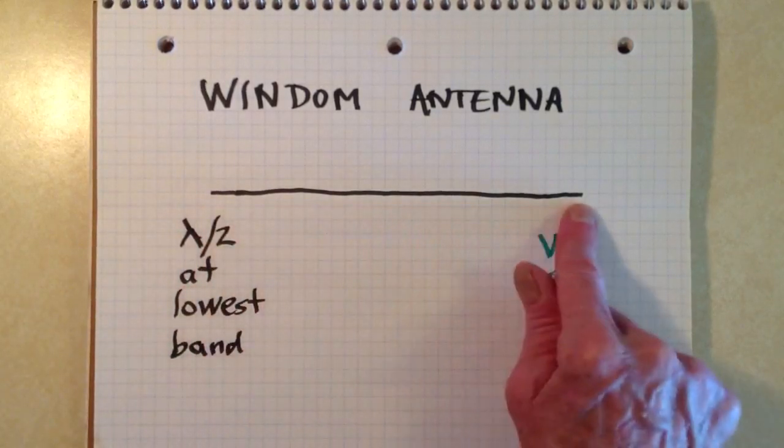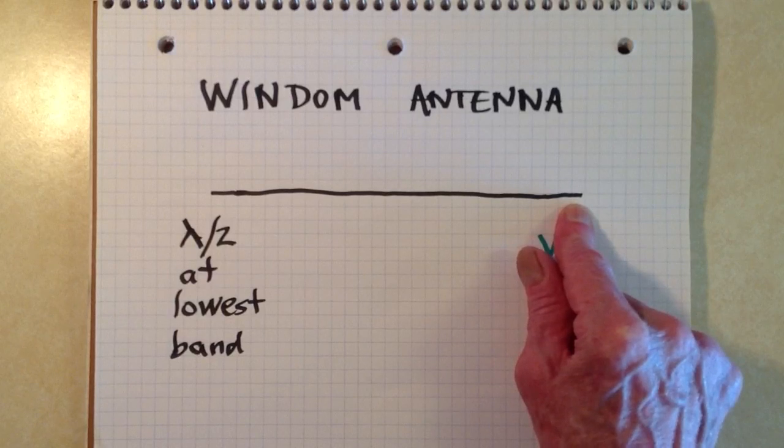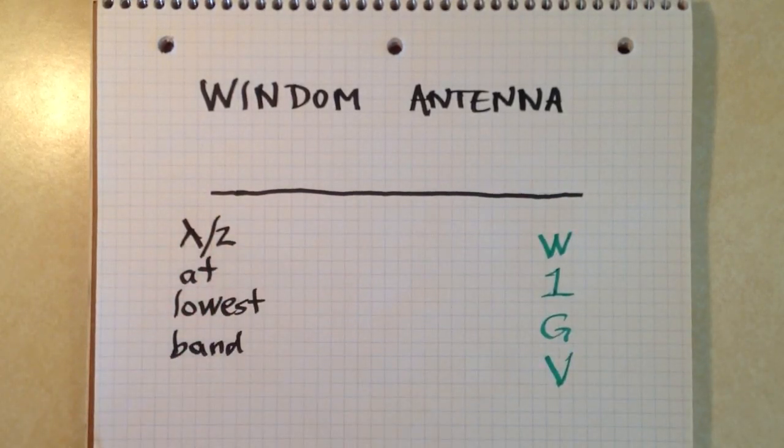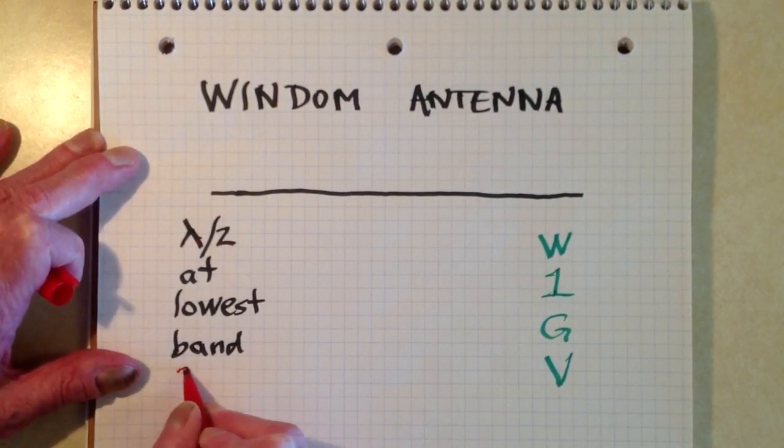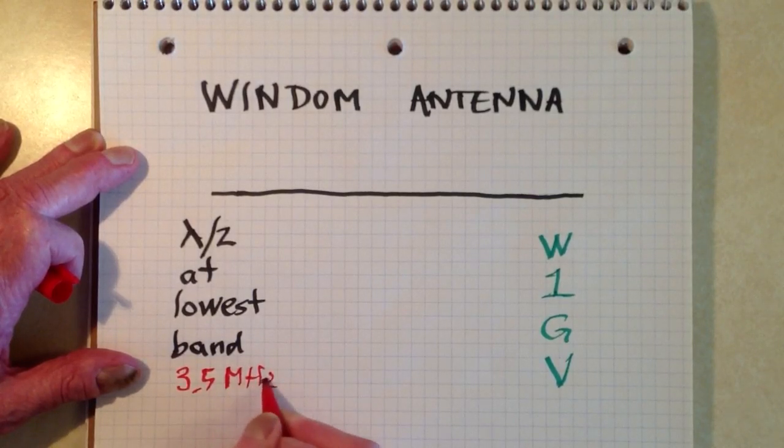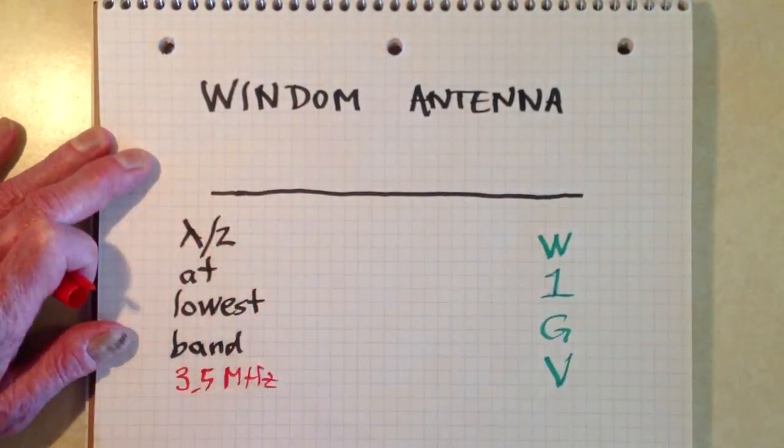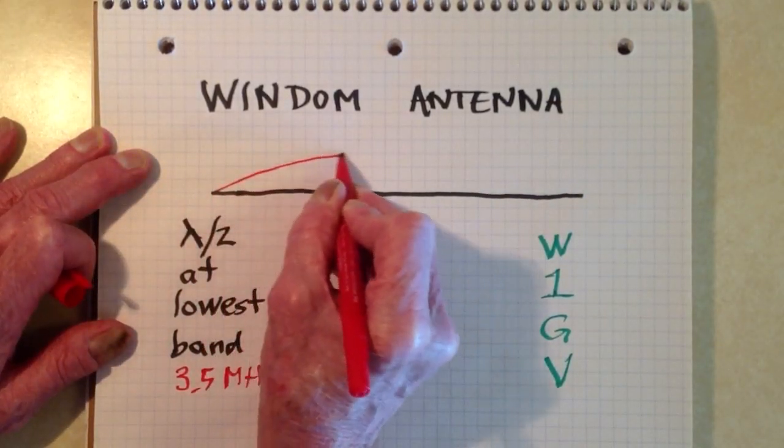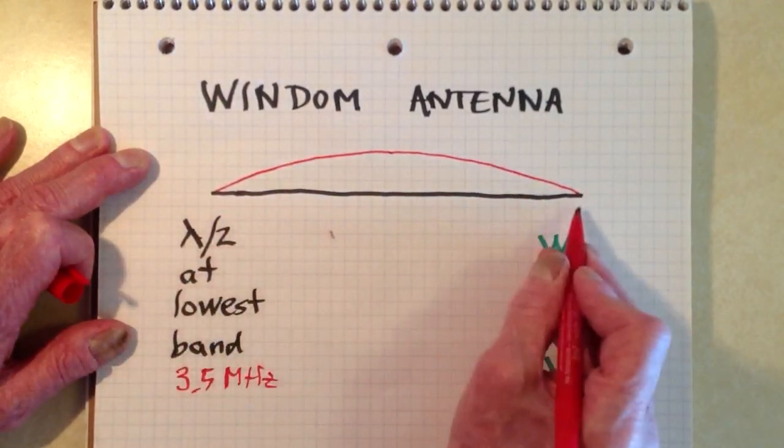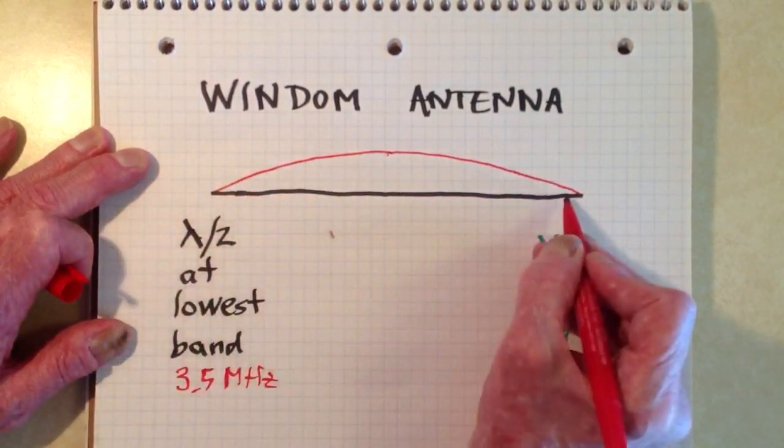Let's consider a radiating element of wire, say, one half wavelength long, all in a straight line. It's a half wavelength at the lowest band that you want to use. And let's just say that that is the 80 meter amateur band at 3.5 megahertz. The current distribution on a half wave antenna looks something like this if you graph it as a function of the position along the antenna. This is the current intensity and this is the position along the antenna.